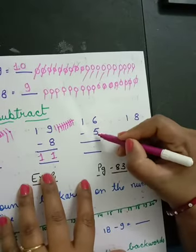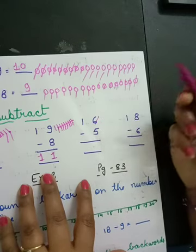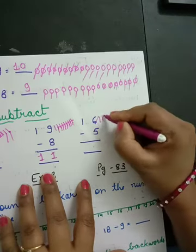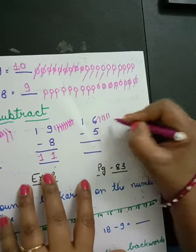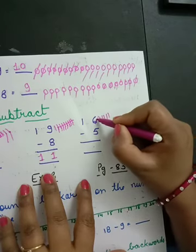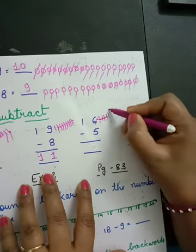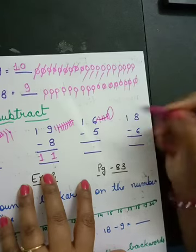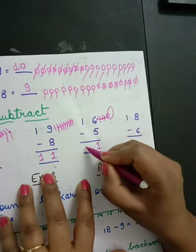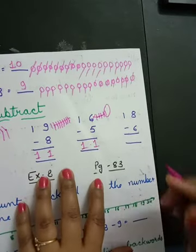Six minus five: draw 6 lines — 1, 2, 3, 4, 5, 6. Cut 5 lines: 1, 2, 3, 4, 5. How many lines remain? One. Write it — one. And one's answer is one. Got it all of you?